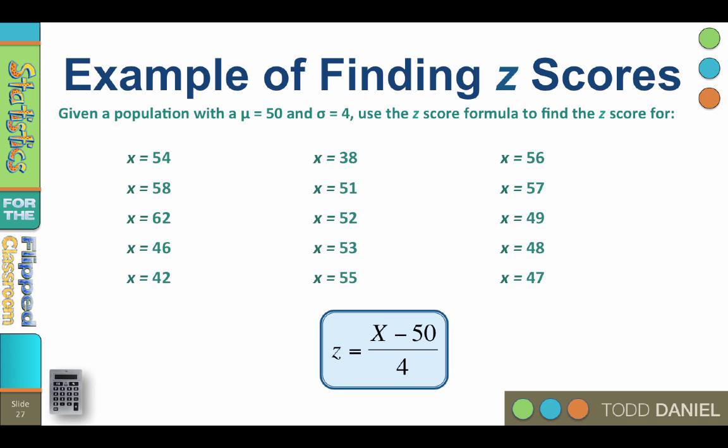For instance, for an x of 54, what is the z-score? Remember that the population has a mean of 50 and a standard deviation of 4. So 54 is four points, one standard deviation above the mean. When we do the math, 54 minus 50 is 4 divided by 4 equals z of positive 1.00.